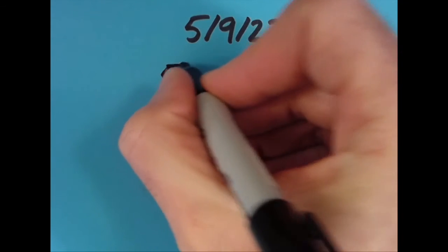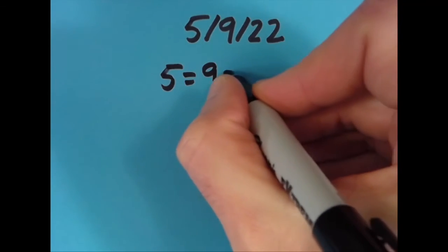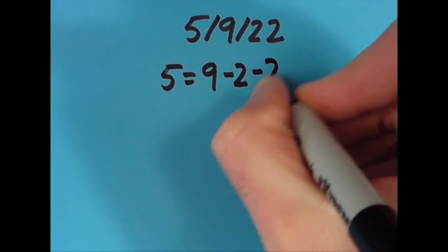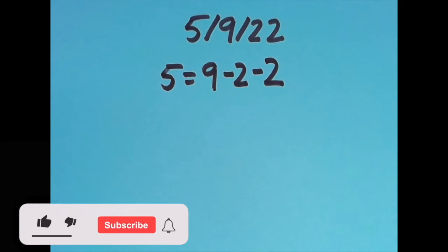So what I came up with was that 5 equals 9 minus 2 minus 2. 9 minus 2 is 7, minus 2 again gives us 5.